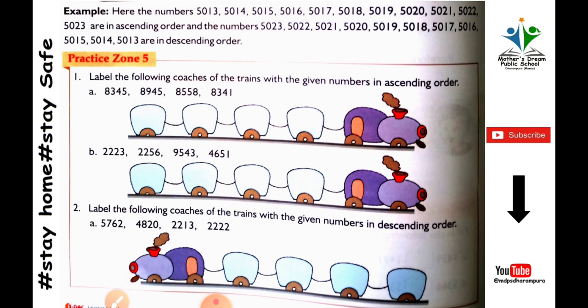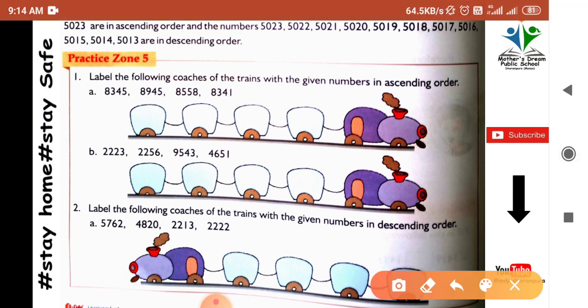Here is practice zone 5, which has two sums. We have to write numbers in ascending order — smallest number first, then the next larger one, and so on. The numbers given are 8345, 8945, 8558, 8341. We compare them: all first digits are 8 — equal. Check second digit: 3, 9, 5, 3 — the smallest is 3.